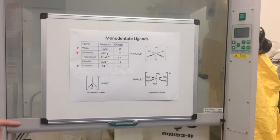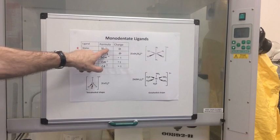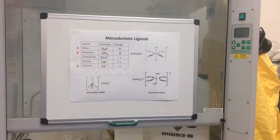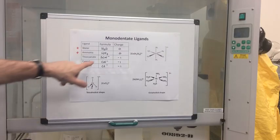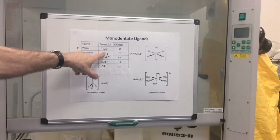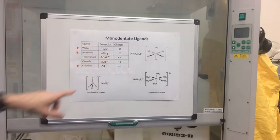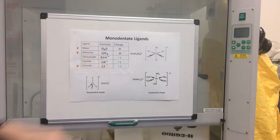The reason they can do that is if you think about a water molecule, there are actually two lone pairs on the oxygen. That lone pair of electrons can be donated to the central metal ion and a dative covalent bond or coordinate bond can form. Ammonia has a lone pair on the nitrogen, and chloride ions have a lone pair on the minus charge.